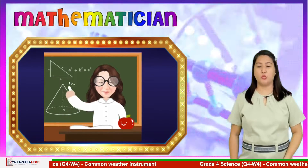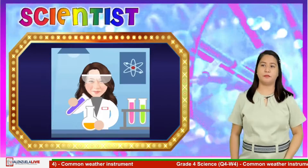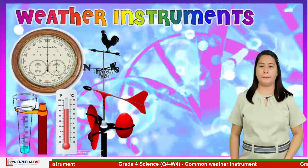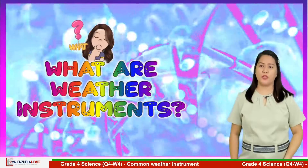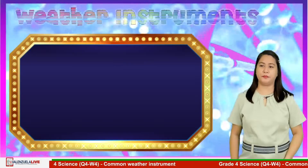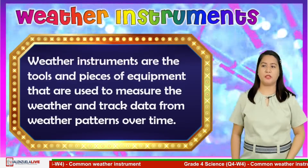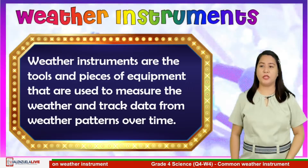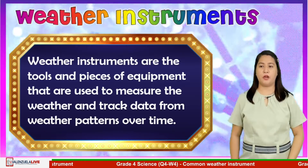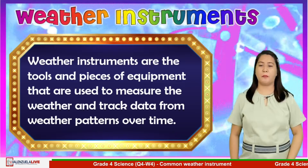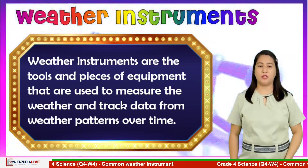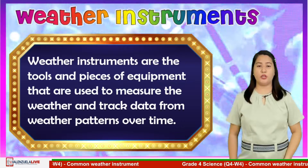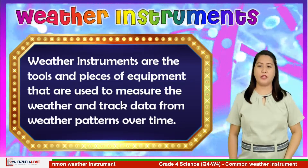If mathematicians use tools to measure objects, scientists use instruments to measure all types of weather. So, what are weather instruments? Weather instruments are tools and pieces of equipment used to measure the weather and track data from weather patterns over time. Scientists and meteorologists use weather instruments to understand weather and climate patterns.